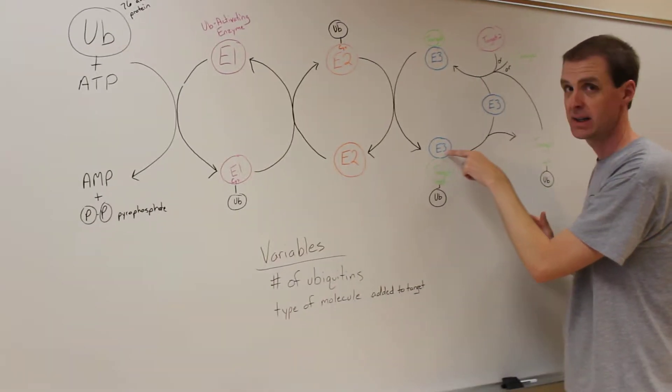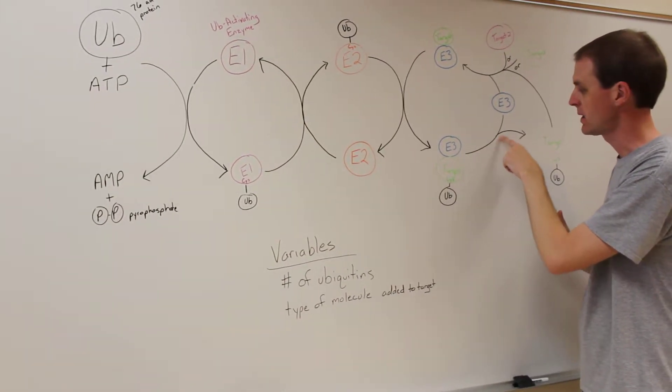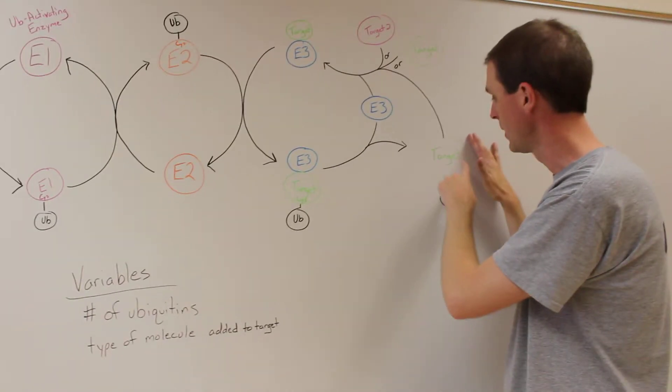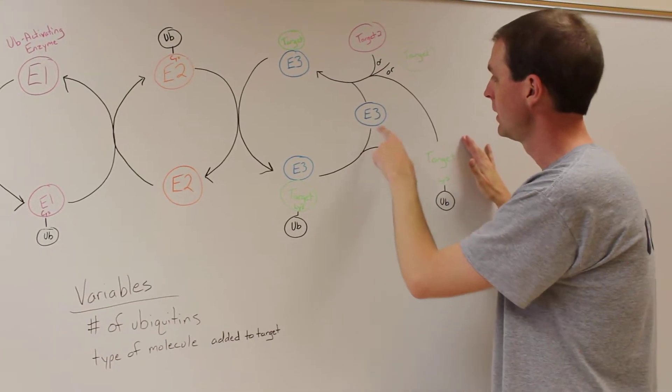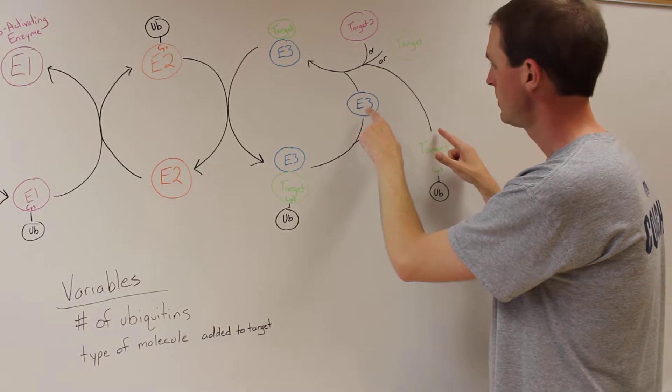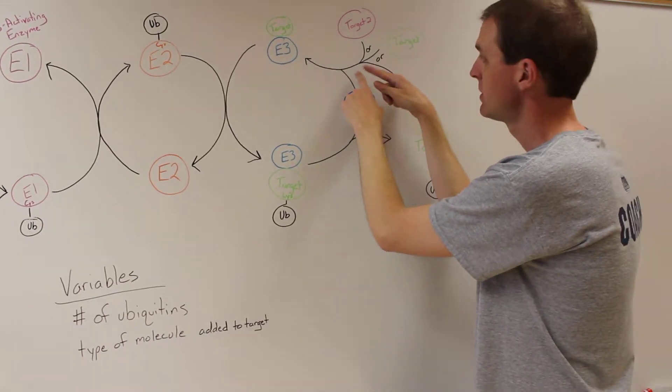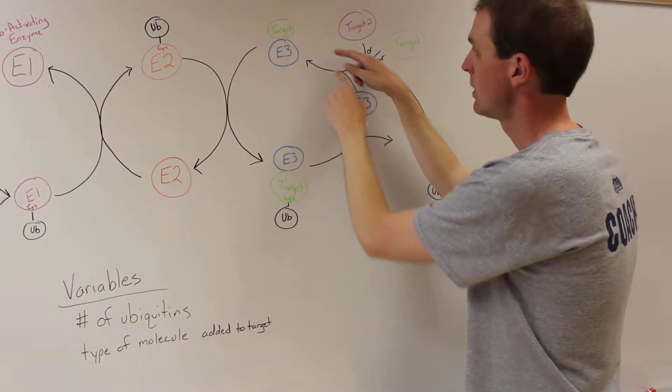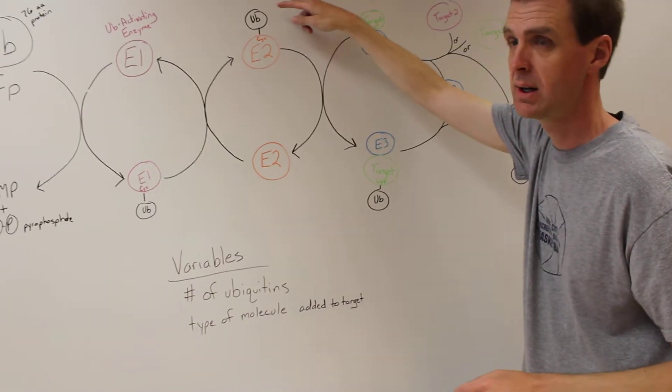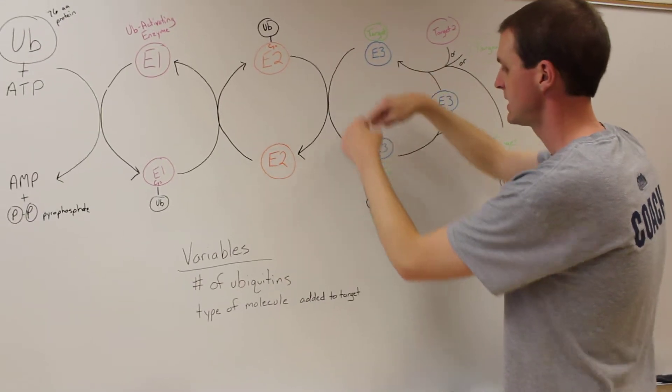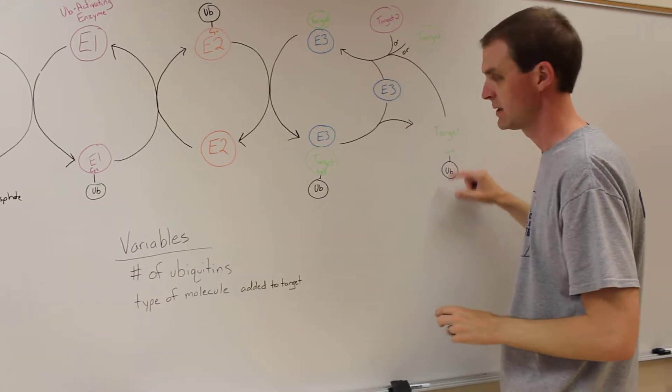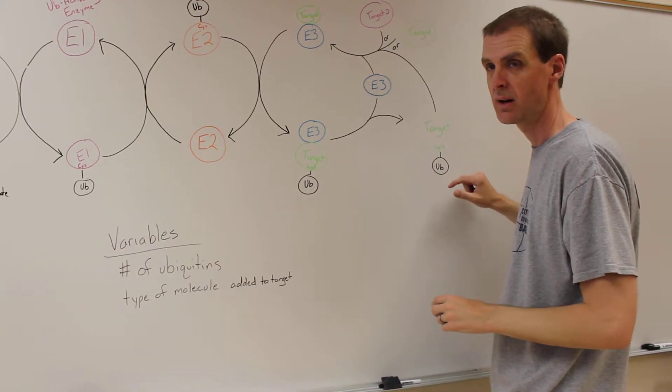The E3 can then let go of the target protein so that you have a target that has an ubiquitin over here, and that's what's kind of shown with this picture. But it could interact with that same protein again to go around the circle, interact with another E2 that has been ubiquitinated and get a second ubiquitin added onto the target. So here instead we'd have two ubiquitins drawn on this target.